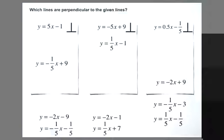y = -1/5x + 9 is perpendicular to y = 5x - 1. Here, we've flipped the 5 and changed the sign.